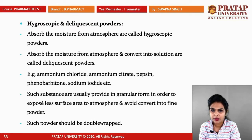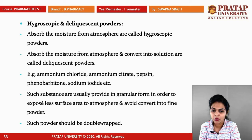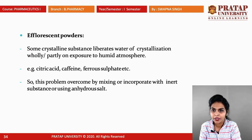Hygroscopic powders can retain moisture — they absorb moisture from the atmosphere. Deliquescent powders absorb moisture and convert into solution. Both types have difficulties in compression. Examples include ammonium fluoride, ammonium citrate, pepsin, phenobarbitone, and sodium iodide. Such substances are usually provided in granular form to expose less surface area to the atmosphere and avoid conversion into fine powder. Such powders should be double-wrapped in packing.